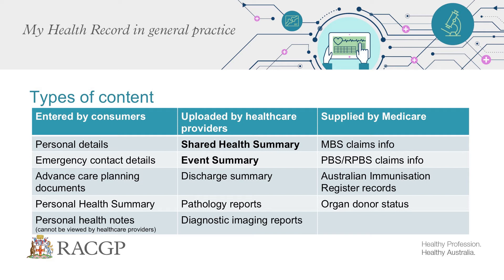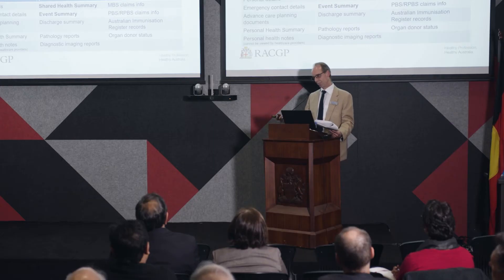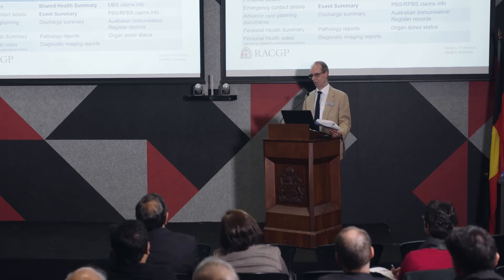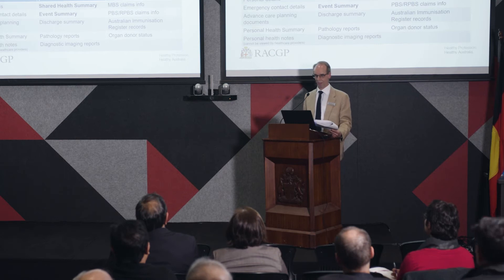There's also uploaded information by healthcare providers. You can see there the shared health summary and event summary highlighted - they're the main ones that we'll be involved in. And then there are discharge summaries, pathology reports, diagnostic imaging reports. There's also information supplied directly from Medicare, which is the MBS claims information. You might find that useful to find out whether somebody's had a 721 or 723 done somewhere else, if you can be bothered looking into it.